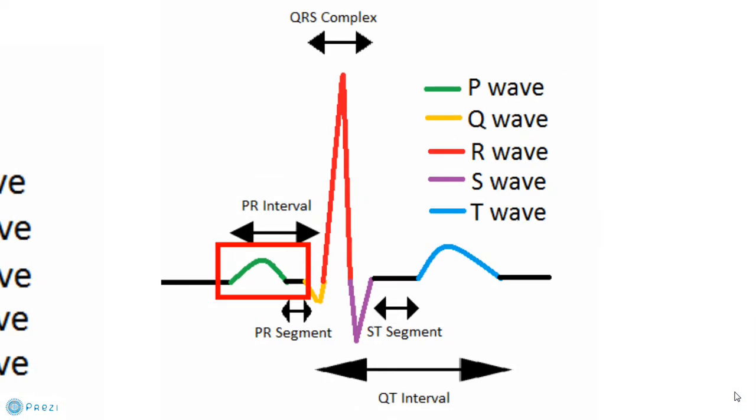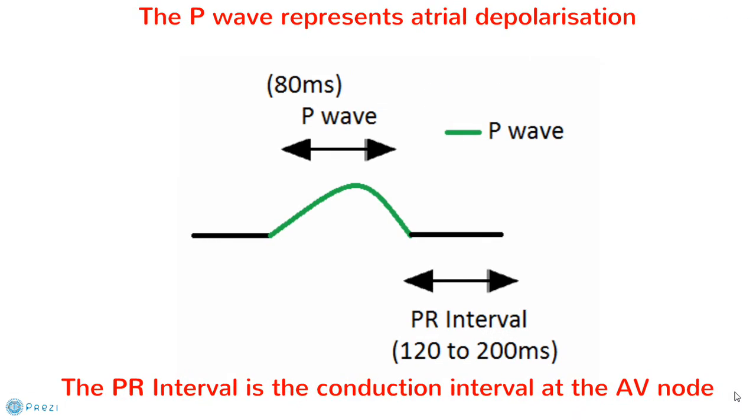This first section shows the P wave, which reflects atrial depolarisation and lasts about 80ms.